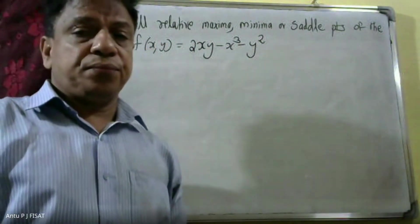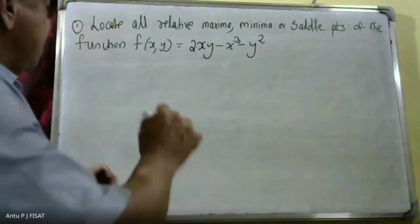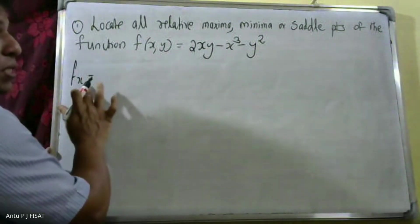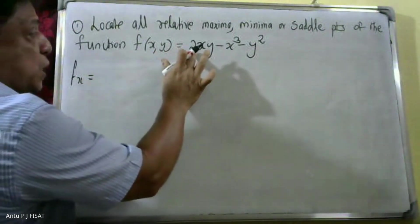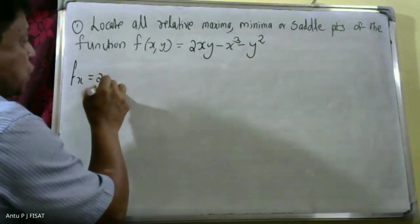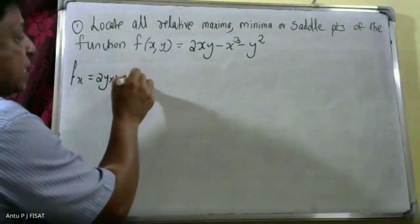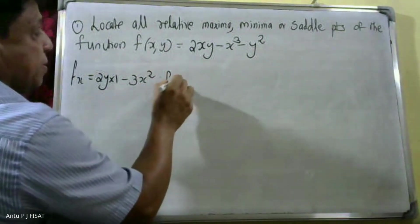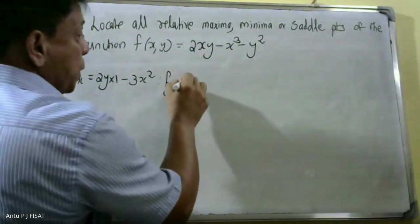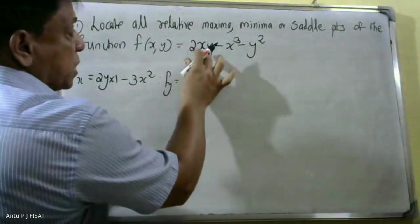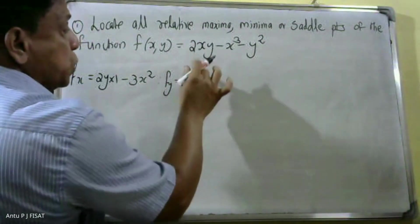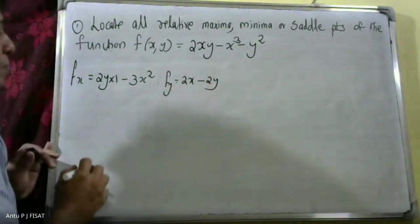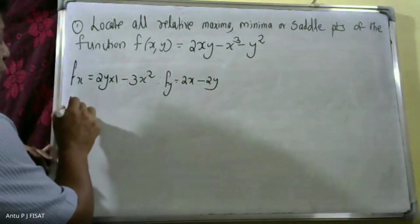Calculate fx by partially differentiating the function with respect to x. Since 2y is a constant, fx equals 2y minus 3x squared. Then calculate fy: since 2x is a constant, fy equals 2x minus 2y.